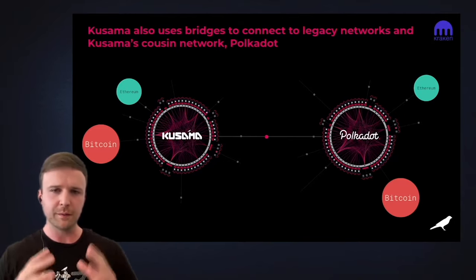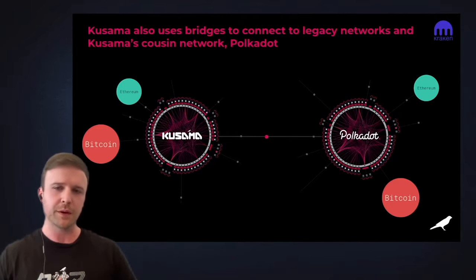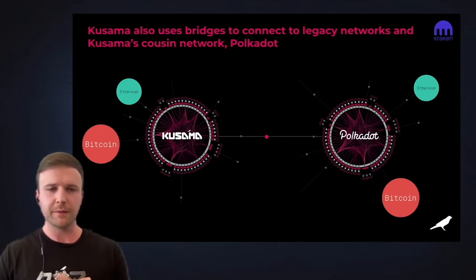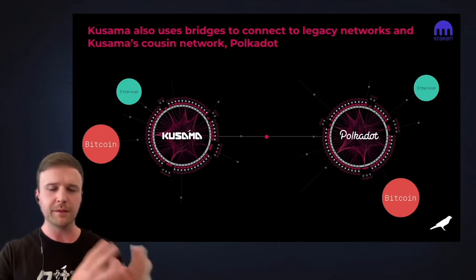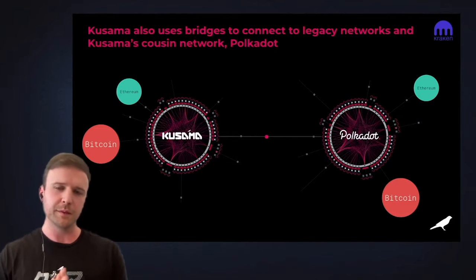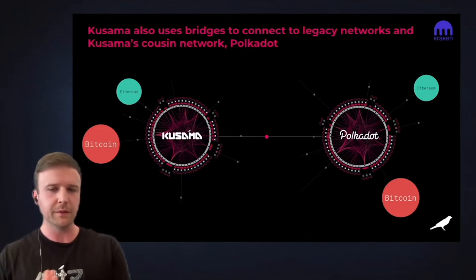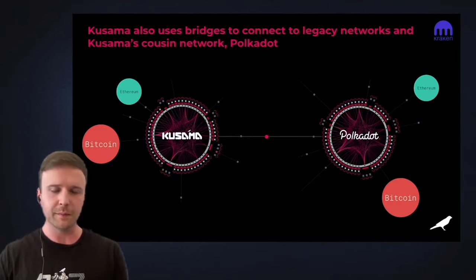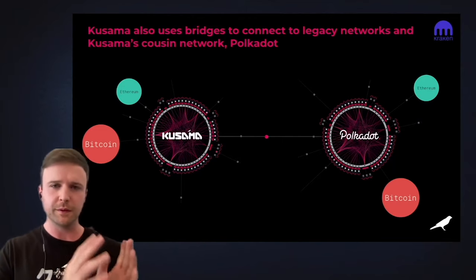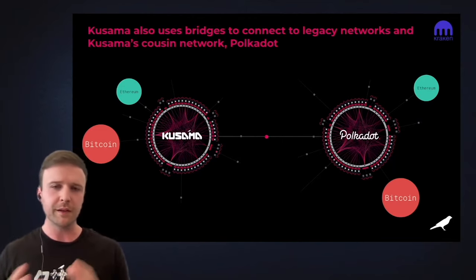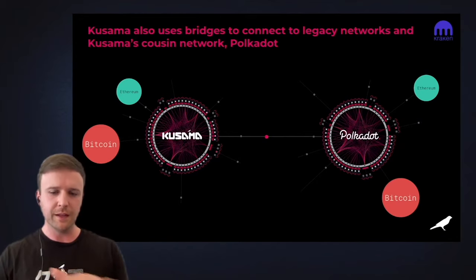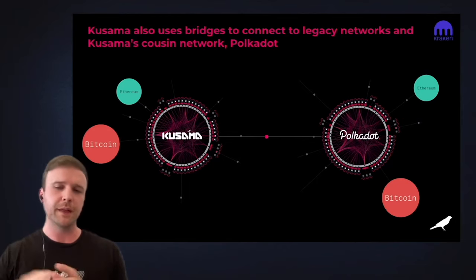Kusama also has bridges and will have bridges to existing networks as well as Polkadot. The bridge to Polkadot will most likely be one of the first bridges in existence. Both networks already have several teams working on bridges to legacy networks like Bitcoin, to bring wrapped Bitcoin to both ecosystems and into the DeFi ecosystems that Karura is building on Kusama and Acala is building on Polkadot. We'll also see bridges to Ethereum and Cosmos, hoping this all connects into one multi-chain ecosystem.